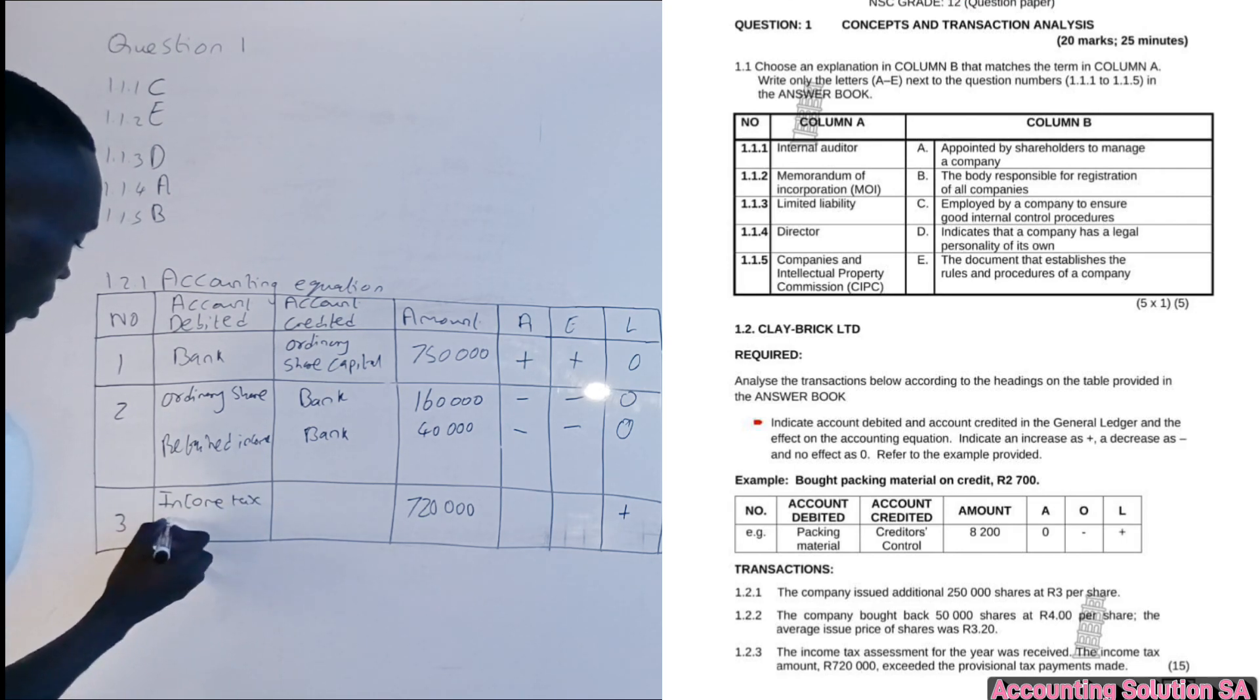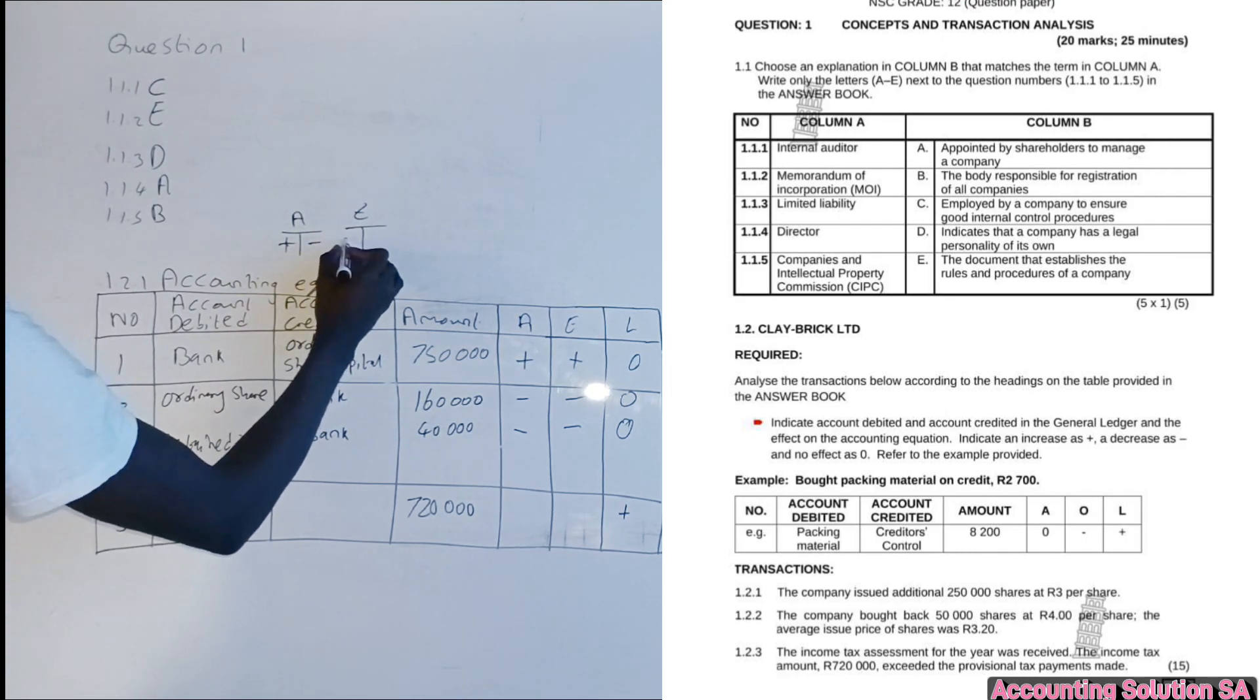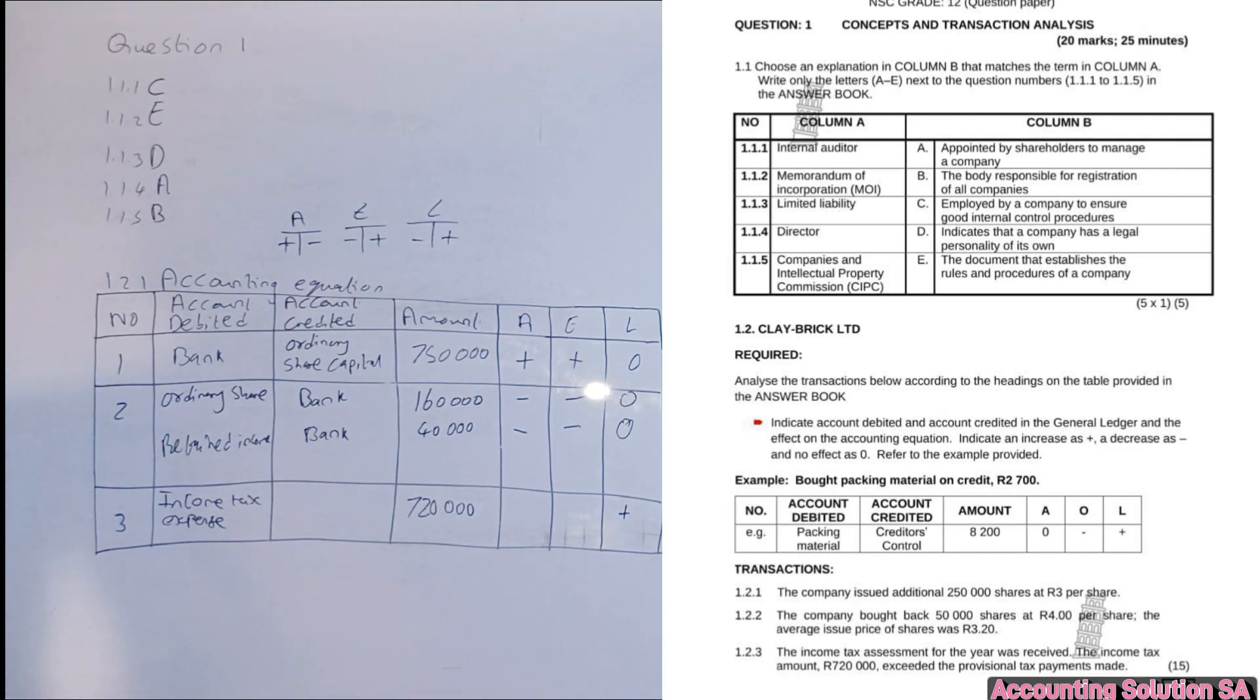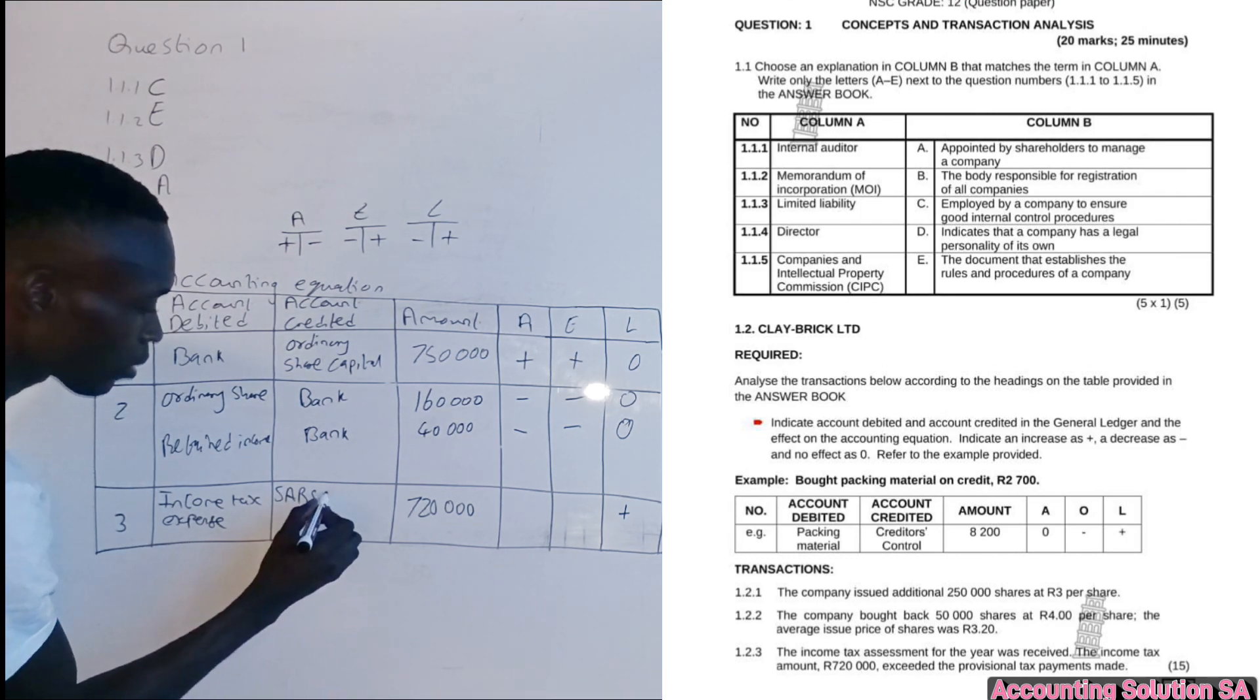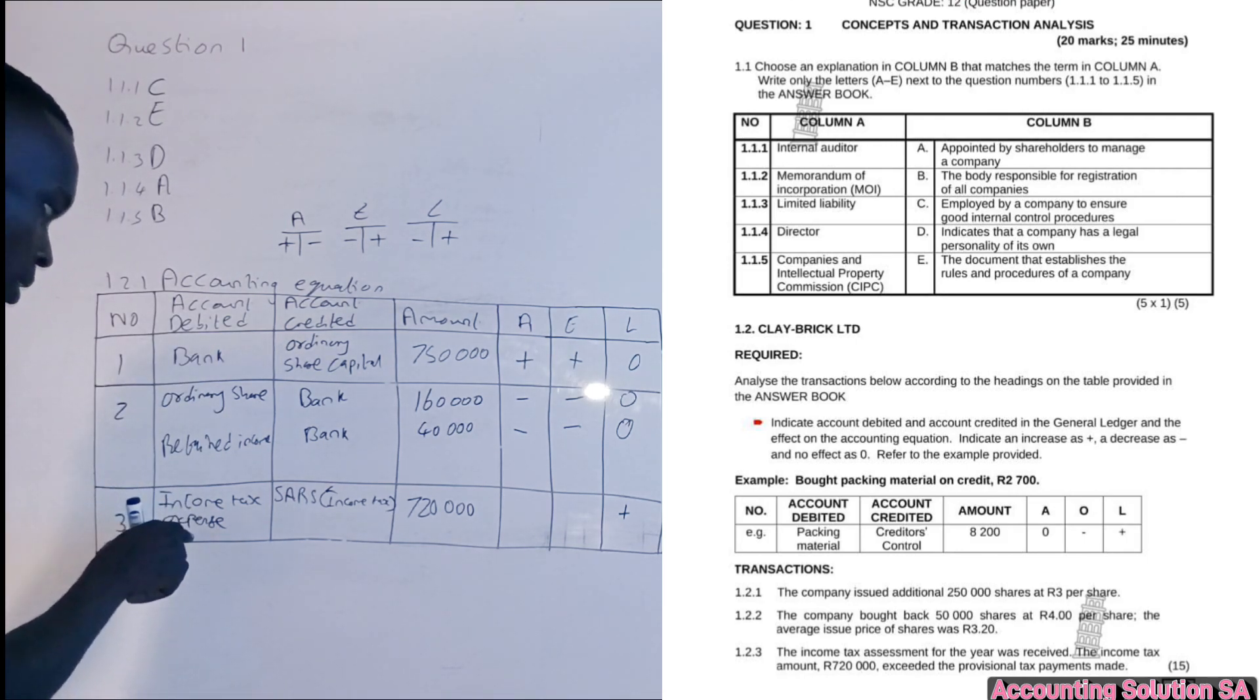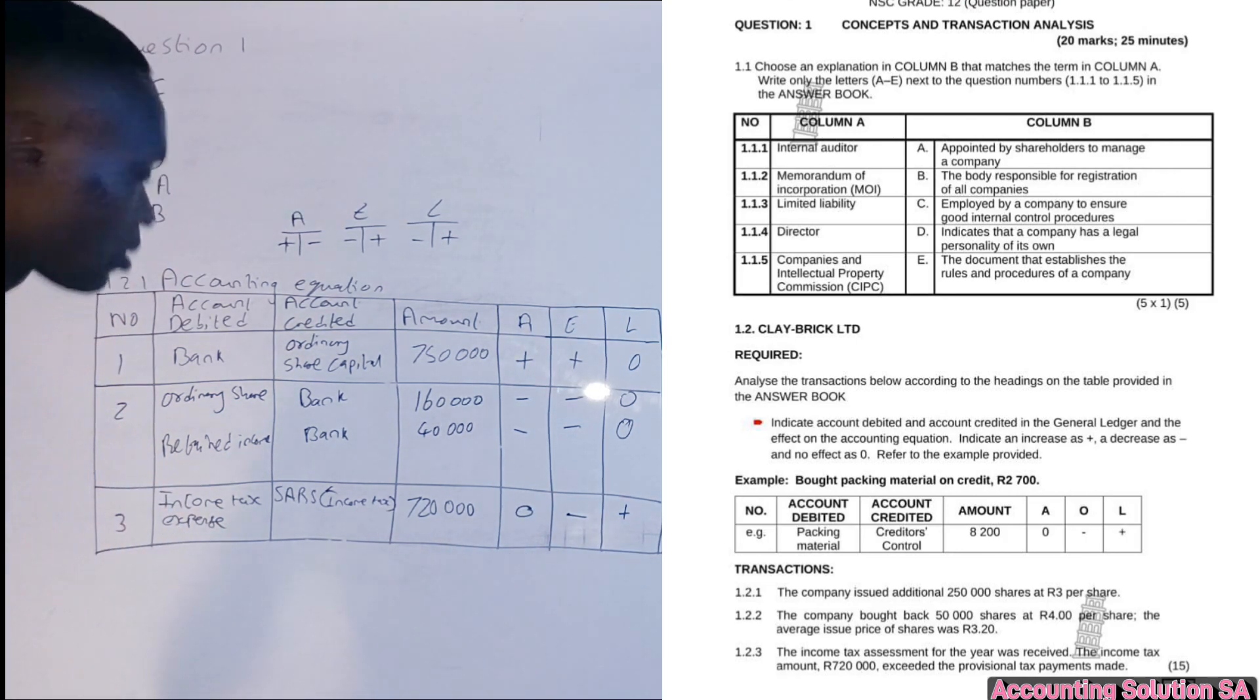So we have income tax expense. Income tax expense we debited. Why we debited? Under our equity, remember we use this rule: assets plus, minus, equity minus, plus, liability minus plus. Expense comes to the debit side, that's why we debit it. Then now liability, because it's going to increase, that's why we're crediting SARS income tax. These two accounts you can see are not the same. Income tax expense and SARS income tax, these two are not the same. This one is liability and this one is an expense. It's going to be a minus and this side is going to be unchanged. If you do all these you're going to get 20 marks for free in this question paper.